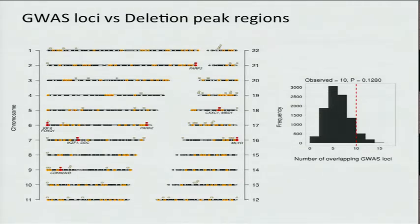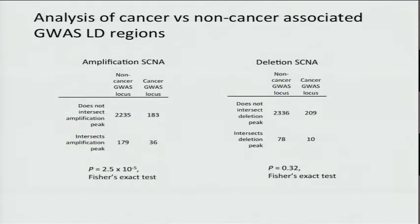This is quite interesting. We pursued an orthogonal line of investigation by comparing cancer-related GWAS loci versus non-cancer-related GWAS regions, and found that cancer-related GWAS regions were significantly enriched in overlap with amplification peak regions, but again did not frequently overlap with deletion SCNAs.